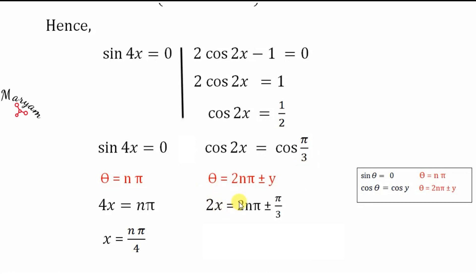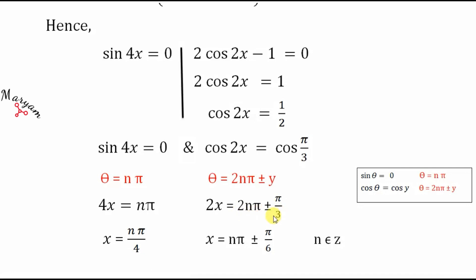So 2x = 2nπ ± π/3. Dividing both sides by 2, we get x = nπ ± π/6, where n belongs to integers. That's all students — very simple! If you have any questions, please let me know in the comments. Thank you.